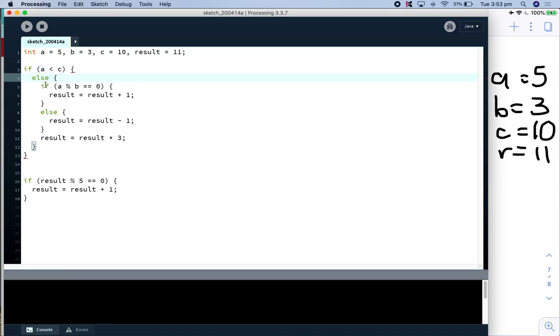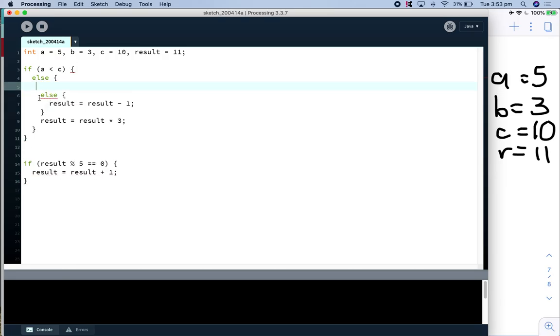Okay so we're going into this if here, we hit this and it says if a modulo b is equal to zero, 5 modulo 3 is not zero. So we know we're not going to go into this if, we're going to be going into this else. Else result is equal to result minus one.